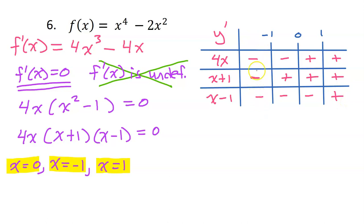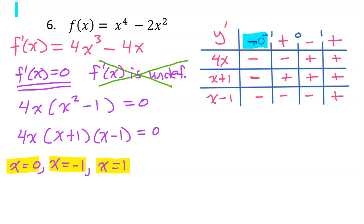So count the negatives. In the first column, we have an odd number of negatives — negative times negative times negative gives you a negative. In the next column, we have a negative times negative, which is a positive. In the next column, we have a single negative, so this will be negative. And in the last column, these are all positive, so this column will be positive. Remember, f of x will be decreasing in the intervals where y prime is negative, and f of x will be increasing in the intervals where y prime is positive. So let's summarize our answer.